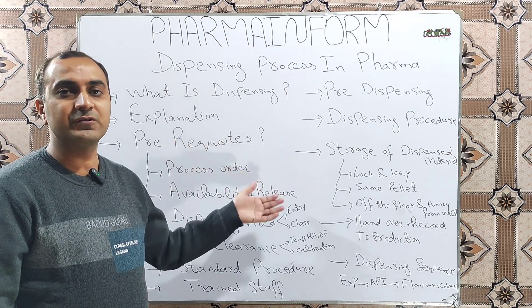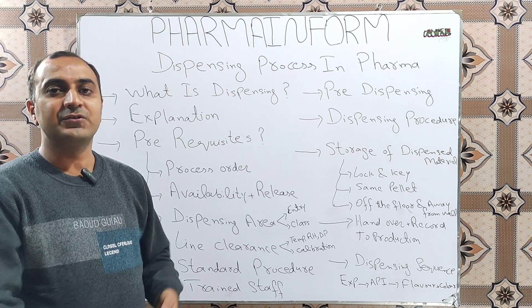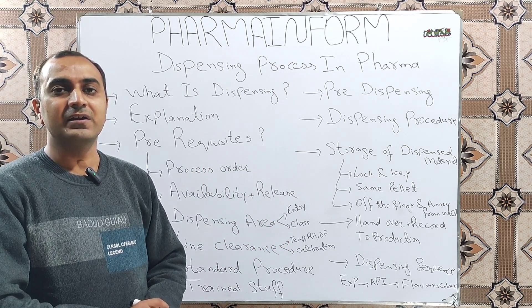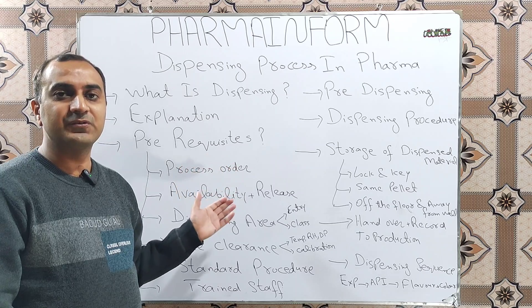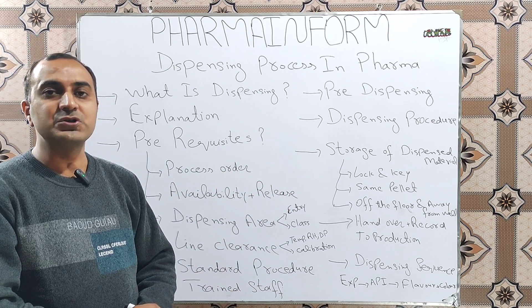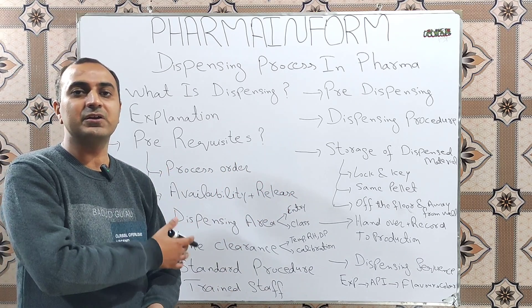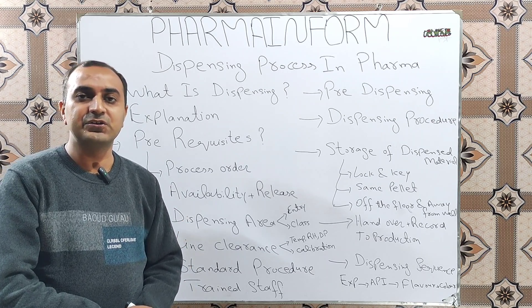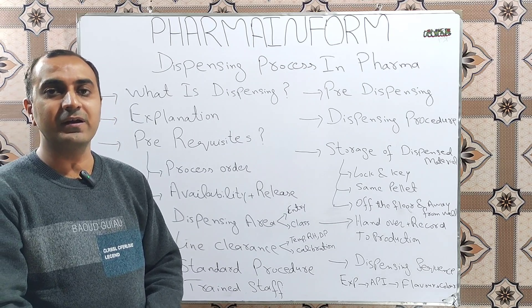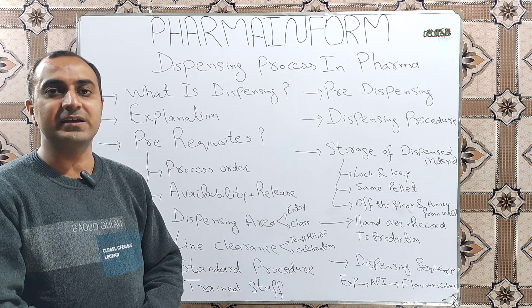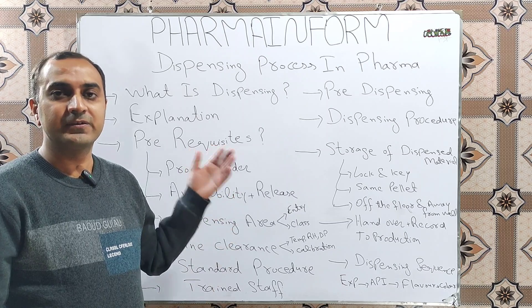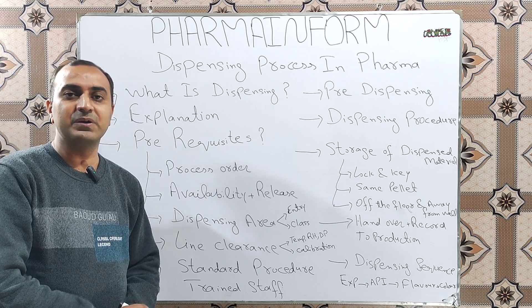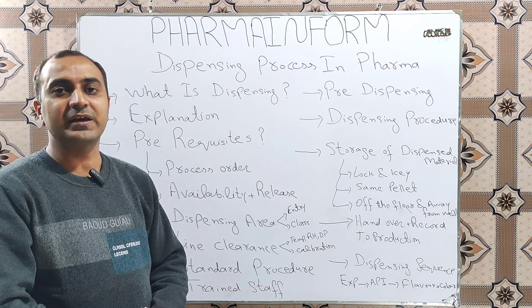Regarding availability and release status: the process order is released when we have the specific quantity of ingredients and these ingredients are in released status. But before dispensing, after receiving the process order, we check again the availability of all the materials and also check that all these materials have been released from the quality control department. This activity is done by an ERP system or SAP system.